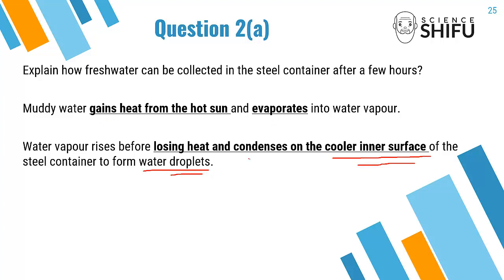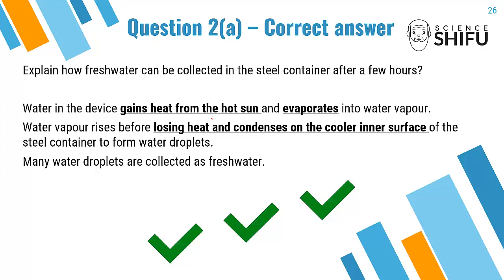However, this answer is still wrong. Why? Because you used the word 'muddy water.' Mud will not evaporate — only the water will evaporate. You need to read the question very carefully. The correct answer is: 'The water in the device gains heat from the hot sun and evaporates into water vapor. The water vapor rises before losing heat and condenses on the cooler inner surface of the steel container to form water droplets.' And because many water droplets are collected, we get fresh water.